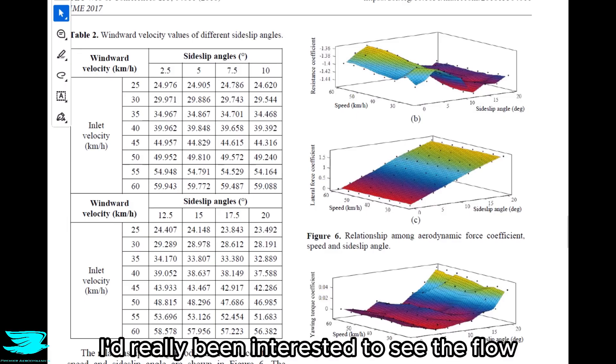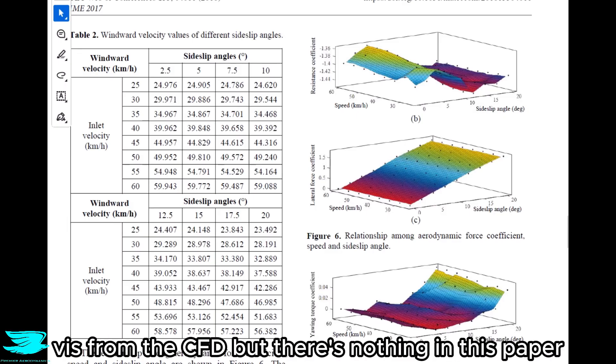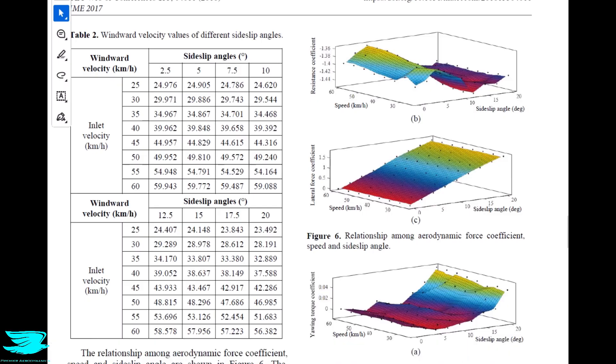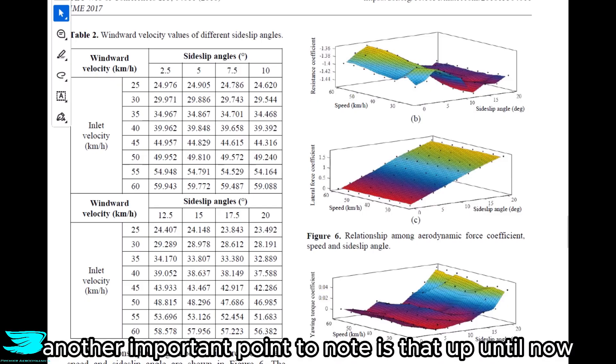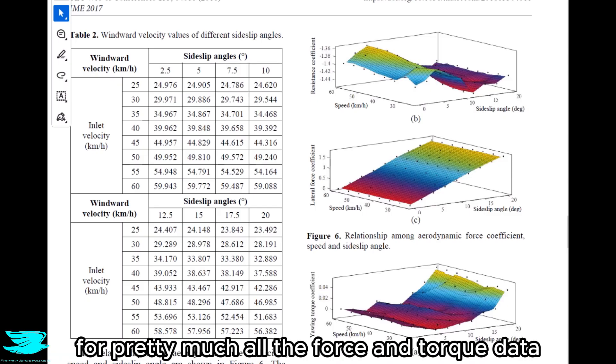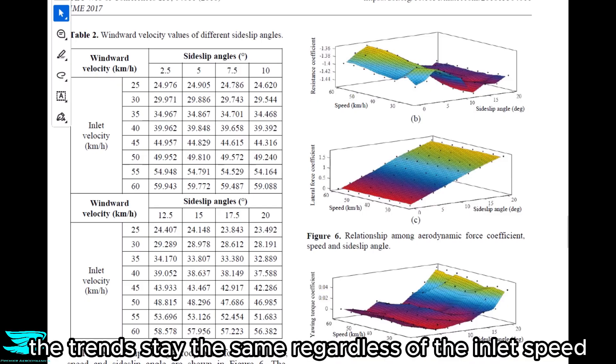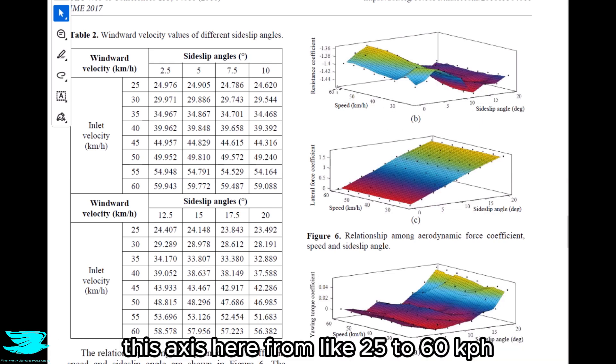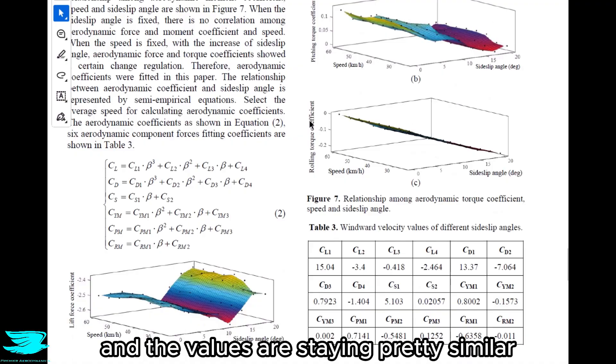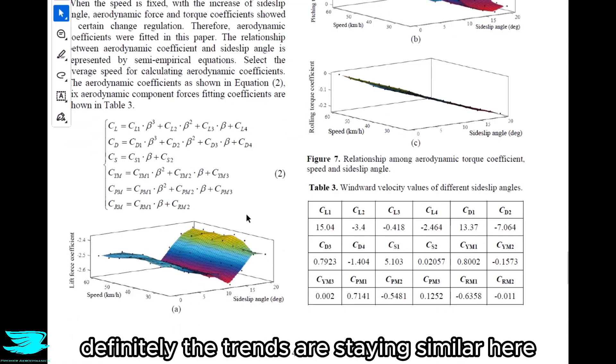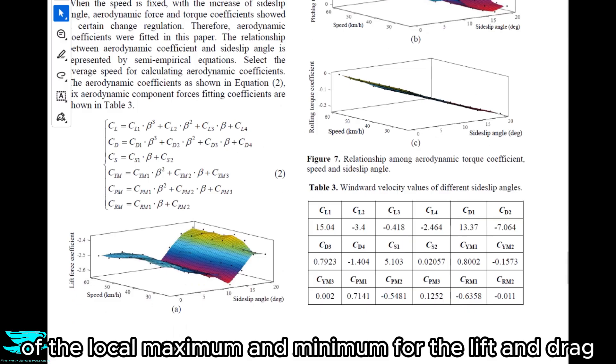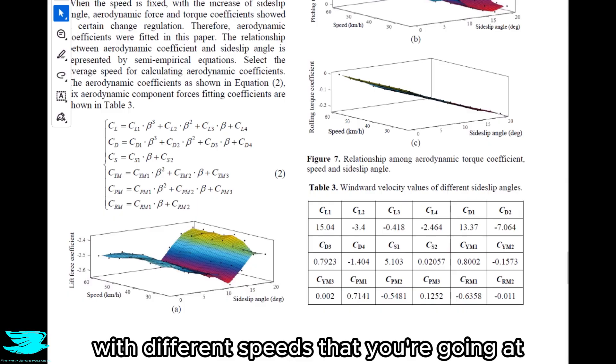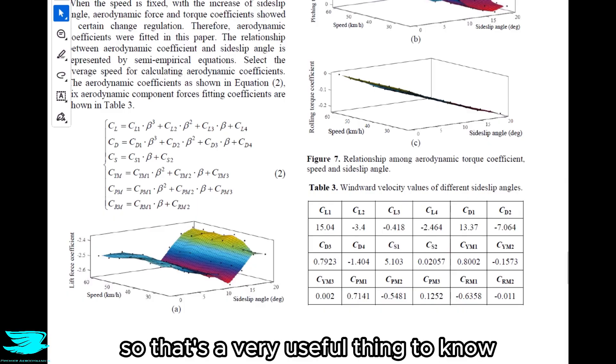After seeing the lift and drag plots, I'd really be interested to see the flow visualization from the CFD, but there's nothing in this paper. Now, another important point to note is that up until now, for pretty much all the force and torque data given here, the trends stay the same regardless of the inlet speed. So you can see the speed is changing along this axis here from like 25 to 60 kph, and the values are staying pretty similar. Definitely the trends are staying similar here. So what we're seeing here of the local maximum and minimum for the lift and drag, they stay pretty much constant with different speeds that you're going at. So that's a very useful thing to know.